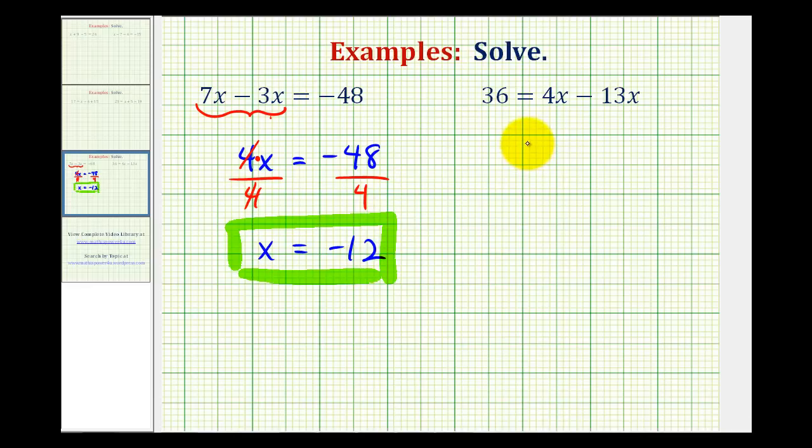Our second example is the same type of equation, except now notice the variable terms are on the right side, but again these two terms are like terms because they both contain the exact same variable part, or in this case one factor of x. So we need to combine these two terms before we solve for x.